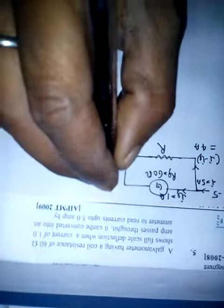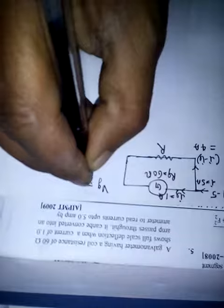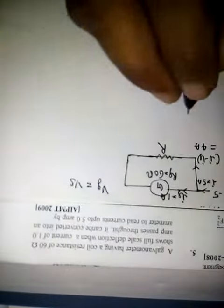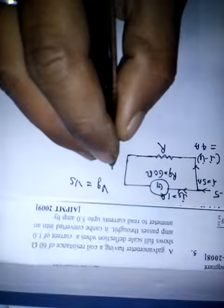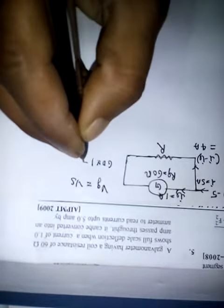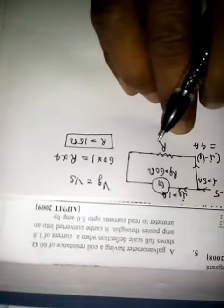Voltage in shunt resistance and galvanometer will be equal. Voltage in the galvanometer is 60 into 1, and shunt resistance is R into 4, so R equals 15 ohm.